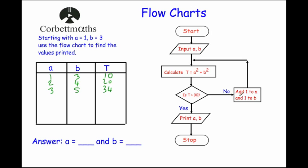Is t larger than 90? No, so add 1 again to get a = 5 and b = 7. Calculate t: 5² + 7² = 25 + 49 = 74. Still not larger than 90, so add 1 again to get a = 6 and b = 8. Calculate t: 6² + 8² = 36 + 64 = 100. Is t larger than 90? Yes! So we go down — it says print a and b. So we print a = 6 and b = 8, and we stop.